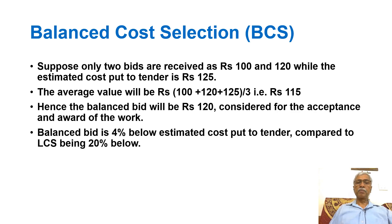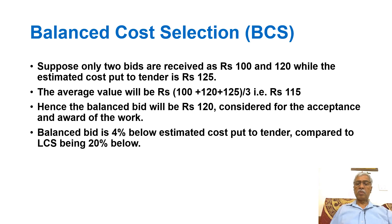Suppose only two bids are received as 100 and 120 — a difference of 20 percent — while the estimated cost is 125, which is more than both bids. The average works out to 115, so the balanced bid considered for acceptance is 120, which is just 4 percent below the estimated cost put to tender, compared to 20 percent below in the case of LCS.